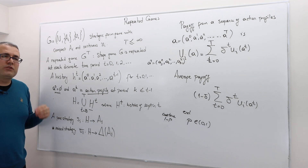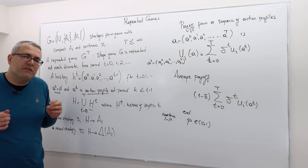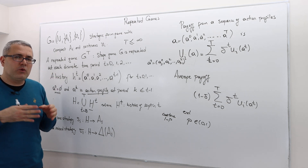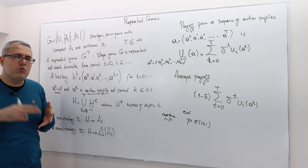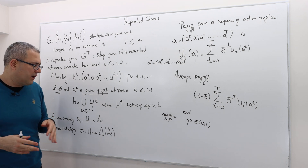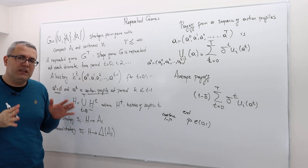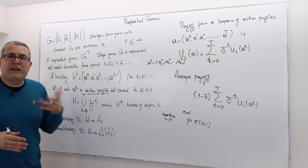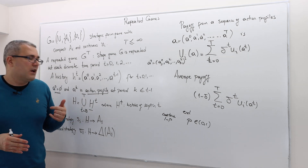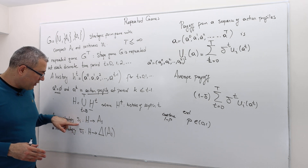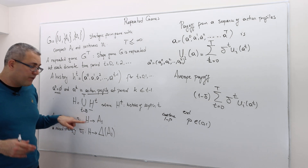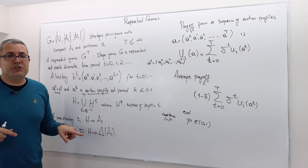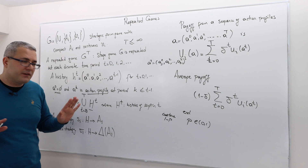What is a pure strategy? Every player observes the history — what happened in period zero, period one, period two, all the way up to period T minus one — and then decides what action to choose. Therefore, a strategy is a mapping, for every player, from each history to an action. It's very simple.